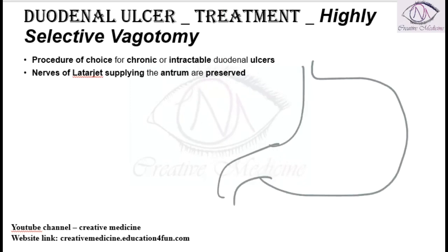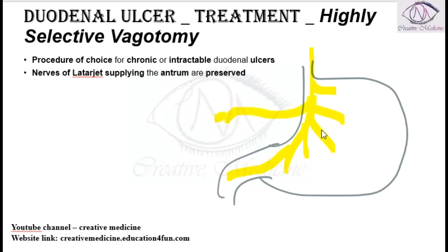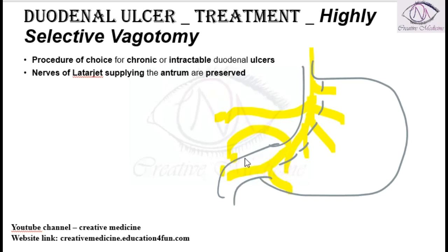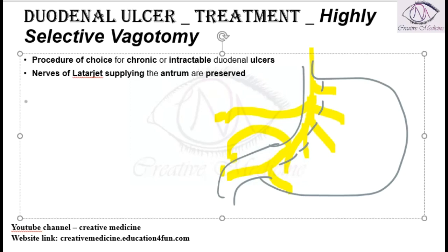If you see, this is the duodenum and we have the vagus. The vagus gives parietal branches, a branch to the hepatic trunk, a branch to the gastric outlet, and the nerve of Latarjet supplying the antrum. In highly selective vagotomy, we cut only the parietal branches, whereas the nerve of Latarjet, the hepatic branch, and the branch to the celiac plexus are all preserved.